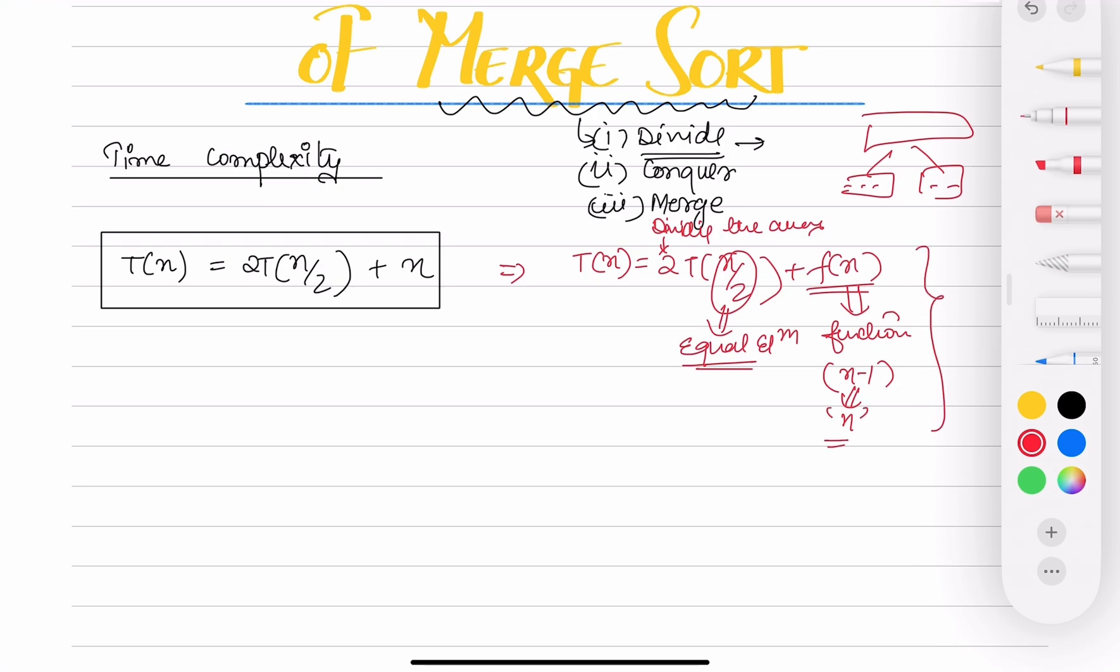If you don't know how to do this, I already have videos on derivation of time complexity in general. You can check out those videos. This is the basics, and I think we have taken 10 to 15 examples of different loops.